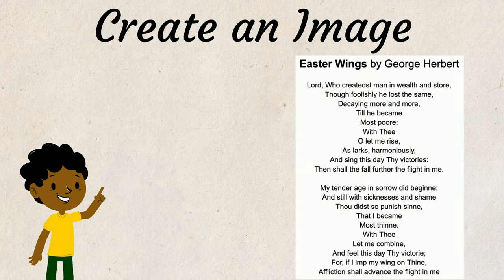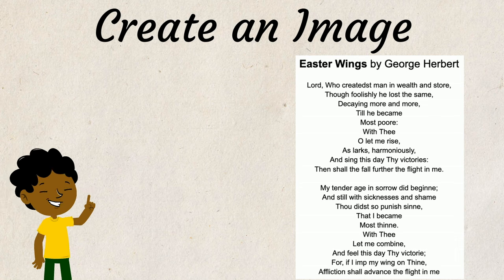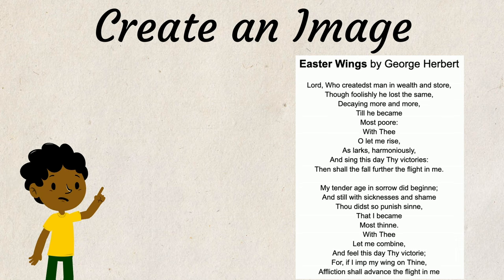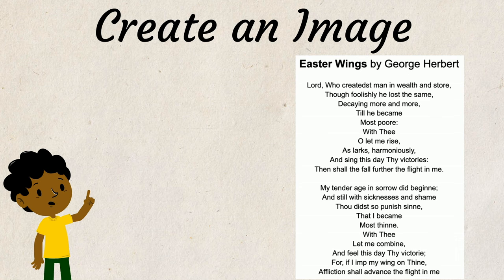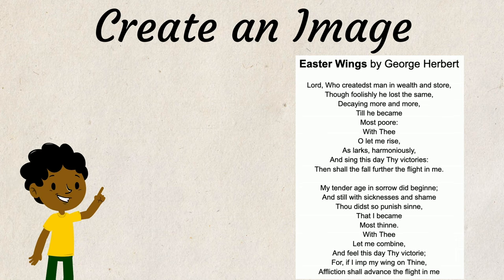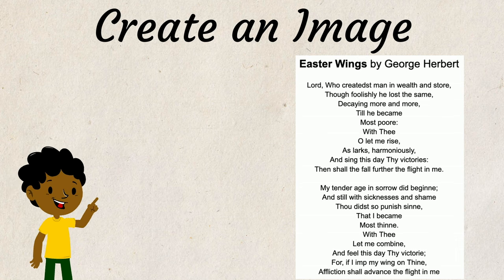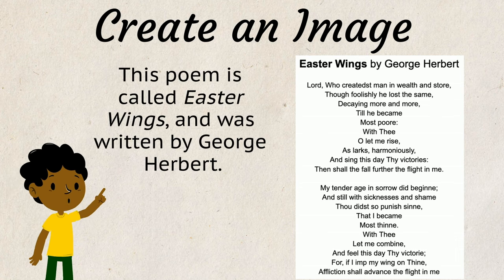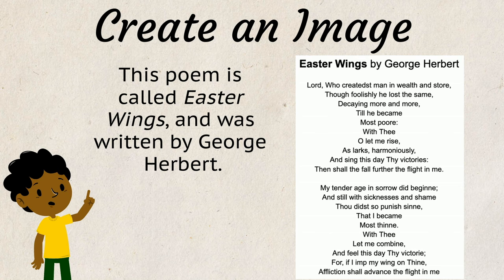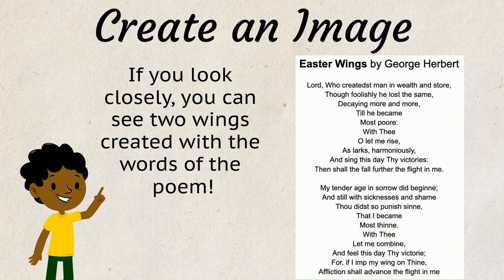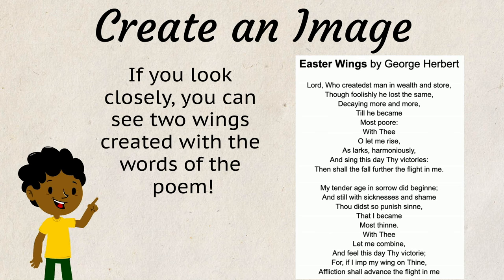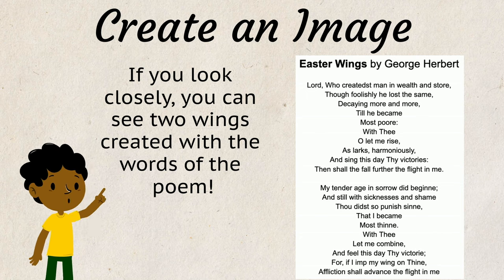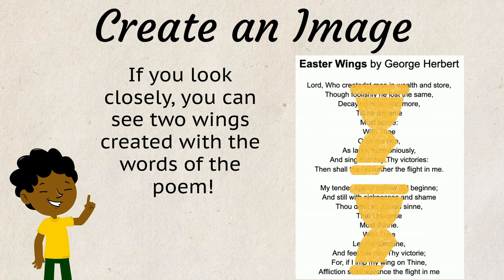Here is an example of a poem written using words to create an image. This poem is called Easter Wings and was written by George Herbert. If you look closely, you can see two wings created with the words of the poem.